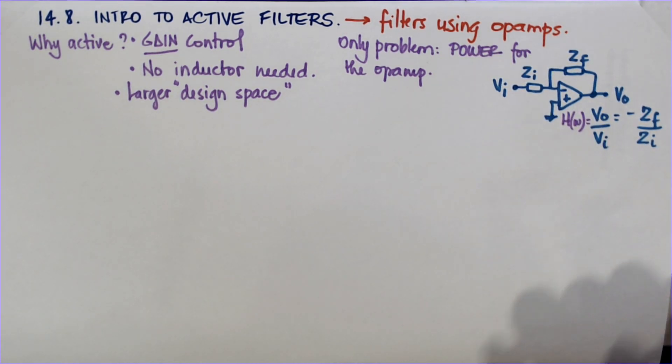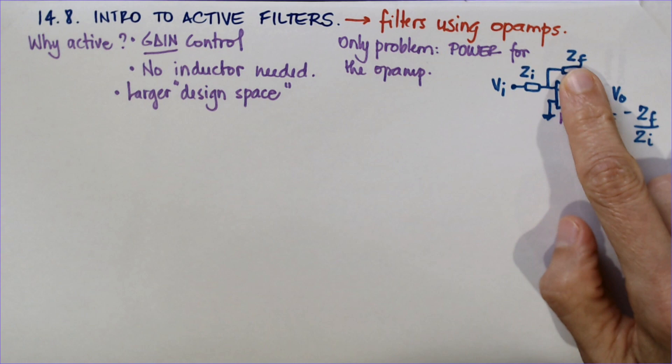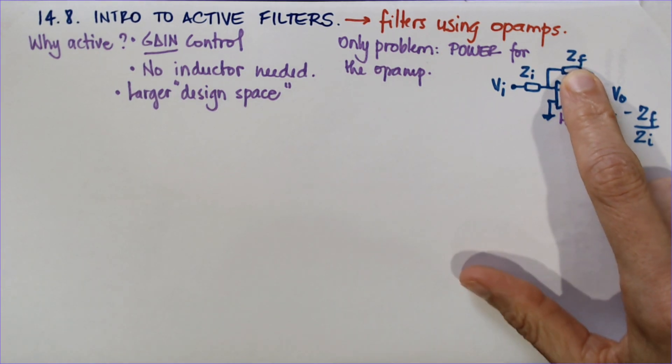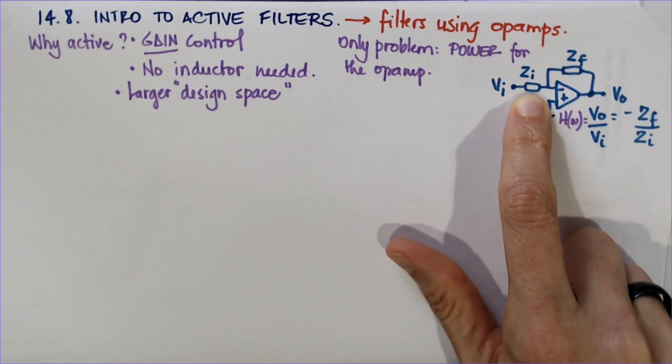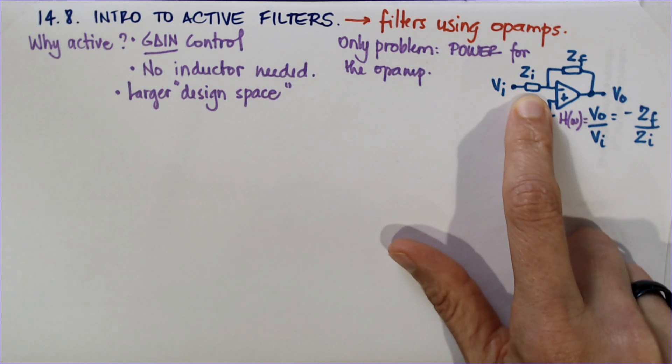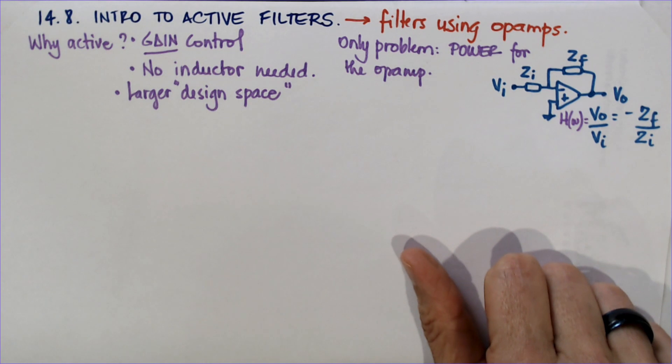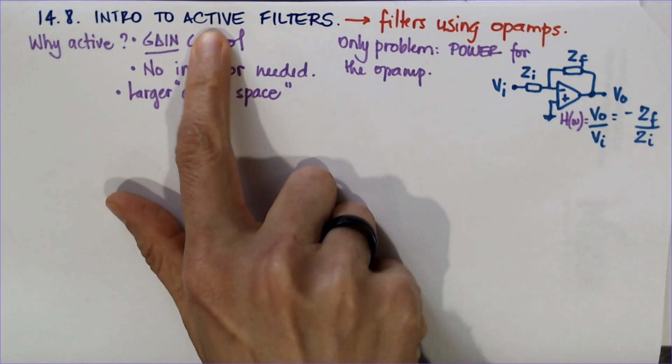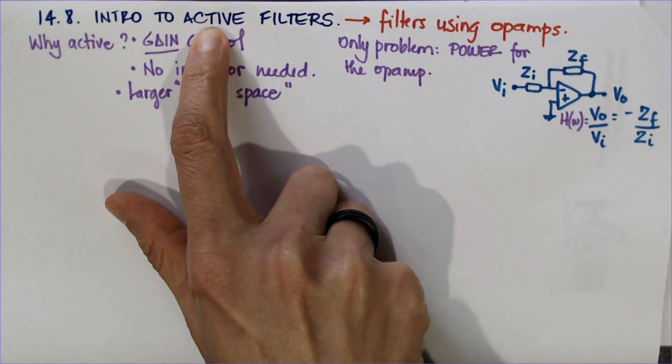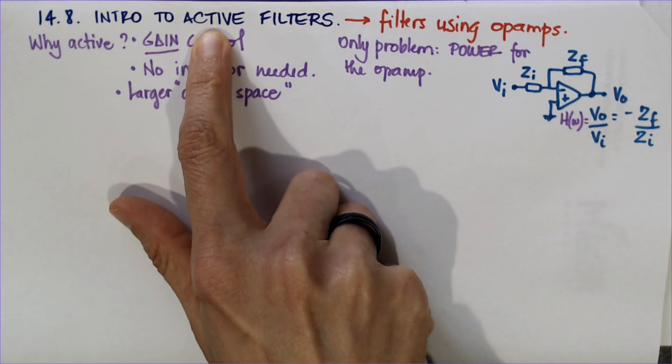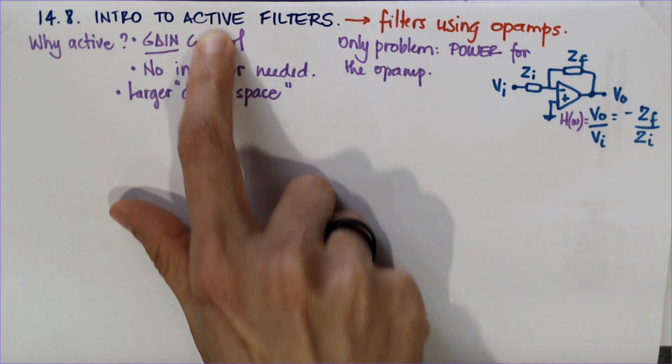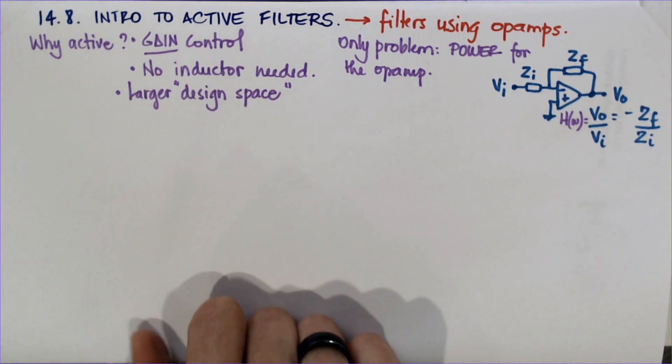Now the generalization of that inverting amplifier is that we have two impedances here. Either we're going to put a capacitor in parallel with the resistor or in series with the resistor to make low-pass and high-pass filters. Instead of passive filters that only have RLCs, we're now using op-amps, and that's what defines the filter to be active.